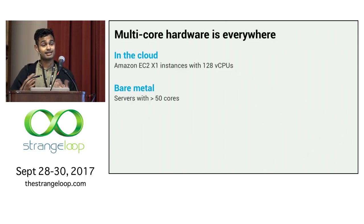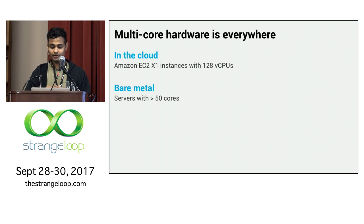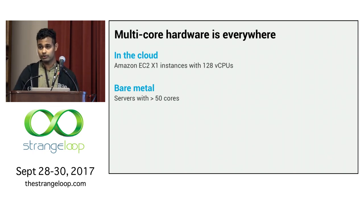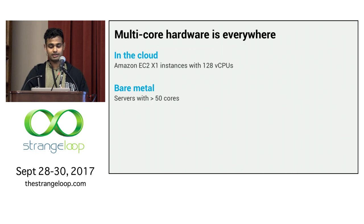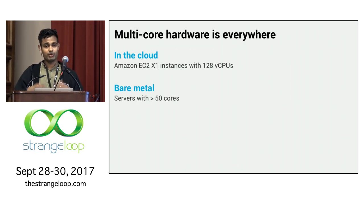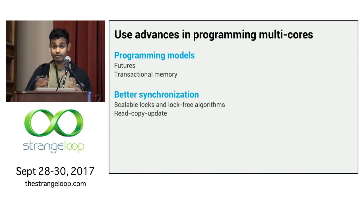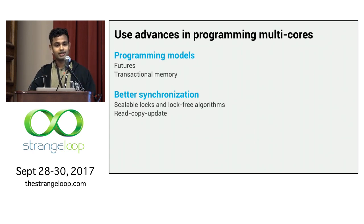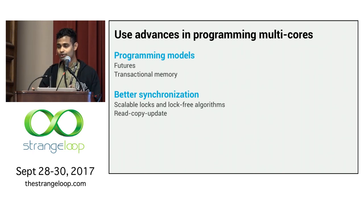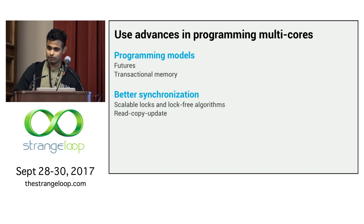Multicore hardware today is increasingly accessible. It's easily accessible in the cloud where Amazon provides EC2 instances with 128 virtual CPUs. It's easily accessible on-premise where systems with more than 50 cores have been widely available for several years. Programming models such as futures and transactional memory are slowly making their way into mainstream languages, and we have better synchronization mechanisms like scalable locks and lock-free algorithms.